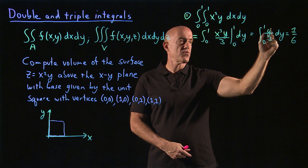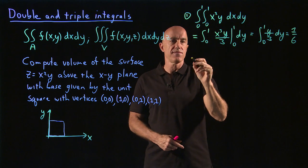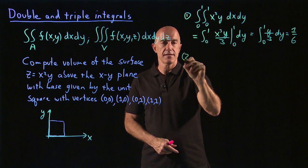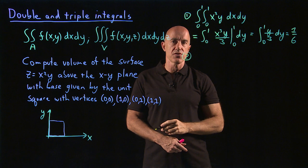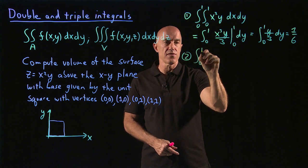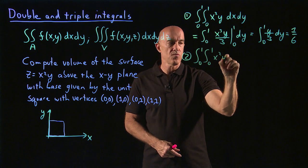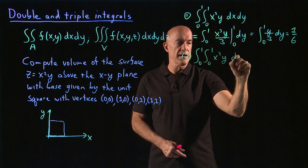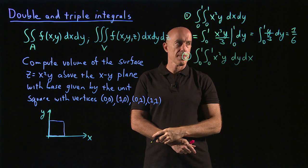So that's the first way. The second way, instead of integrating x first, we could integrate y first. So we could have the integral from 0 to 1, 0 to 1, x squared y. But now we integrate dy dx.